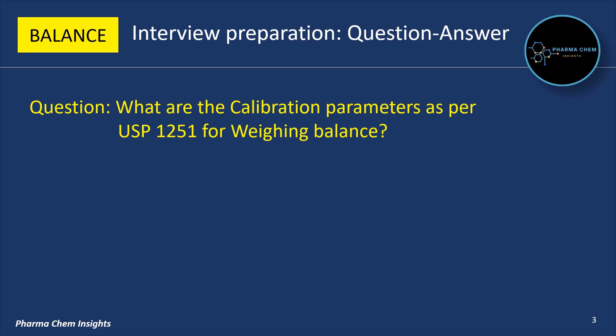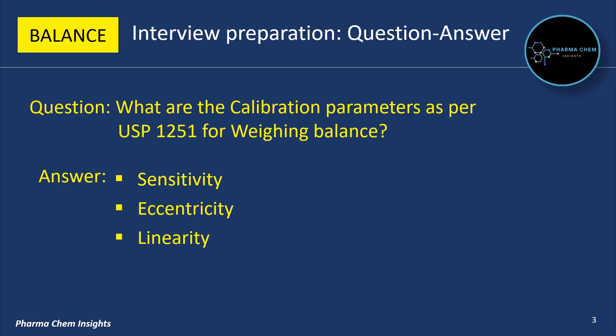Next question: what are the calibration parameters as per USP 1251 for weighing balance? The calibration parameters as per USP 1251 are: first, sensitivity; second, eccentricity; third, linearity; fourth, repeatability.